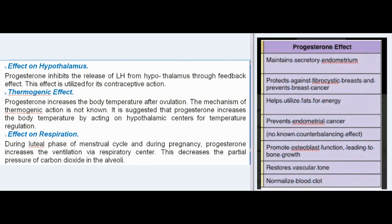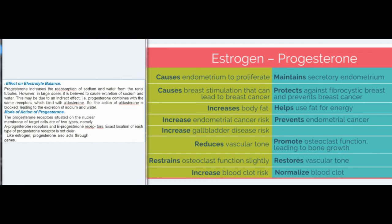Effect on Respiration: during the luteal phase of the menstrual cycle and during pregnancy, progesterone increases ventilation via the respiratory center. This decreases the partial pressure of carbon dioxide in the alveoli. Effect on Electrolyte Balance: progesterone increases the reabsorption of sodium and water from the renal tubules. However, in large doses, it is believed to cause excretion of sodium and water. This may be due to an indirect effect — progesterone combines with the same receptors that bind with aldosterone, so the action of aldosterone is blocked, leading to excretion of sodium and water.